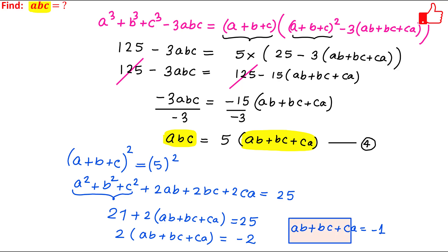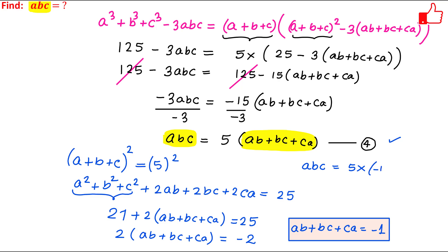Now I can plug this value into equation 4. So abc equals 5 times (ab plus bc plus ca), and ab plus bc plus ca is minus 1. So this means abc equals 5 times minus 1, which equals minus 5. So the answer for this problem is abc equals minus 5.